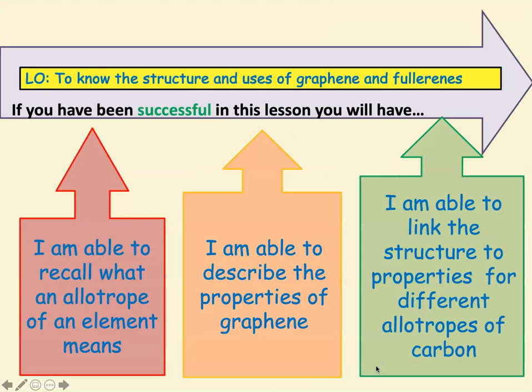Our learning objective today is to know the structure and uses of graphene and fullerenes. We're going to look at what we mean by an allotrope, describe the properties of graphene, and then hopefully you will be able to link the structure to the properties for different allotropes of carbon.